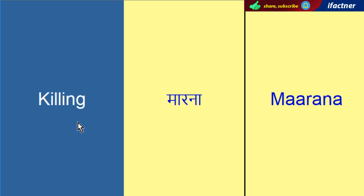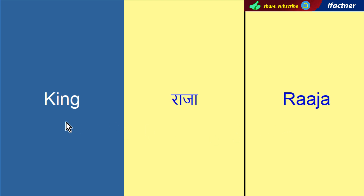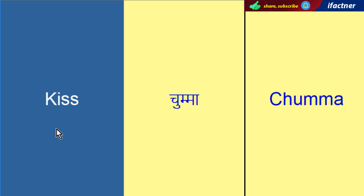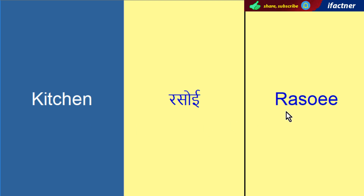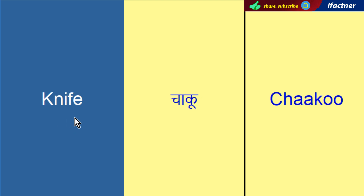Maarna — Killing. Maherbaan — Kind. Raja — King. Chumma — Kiss. Rasui — Kitchen. Gutnaap — Knee. Chakoo — Knife.